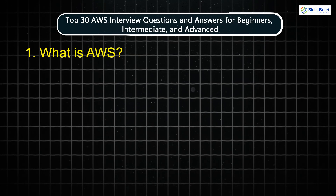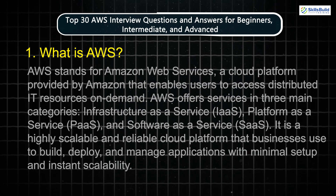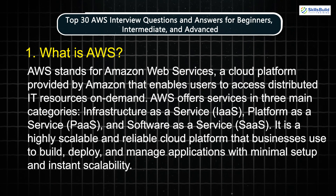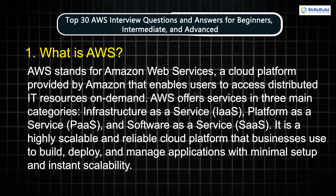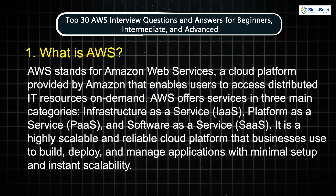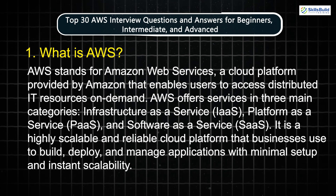Question 1: What is AWS? AWS stands for Amazon Web Services, a cloud platform provided by Amazon that enables users to access distributed IT resources on demand. AWS offers services in three main categories: infrastructure as a service, platform as a service, and software as a service. It is a highly scalable and reliable cloud platform that businesses use to build, deploy, and manage applications with minimal setup and instant scalability.